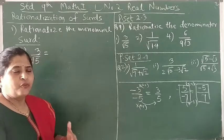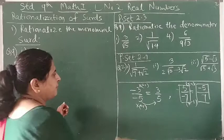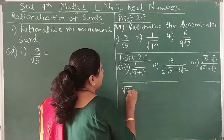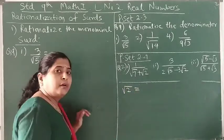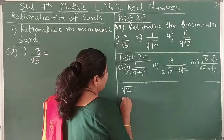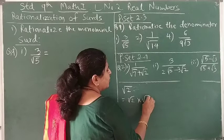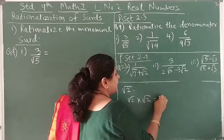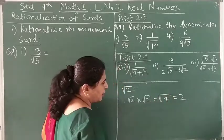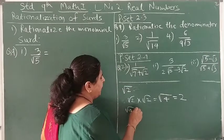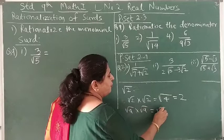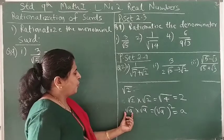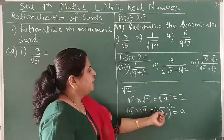What is the rationalizing factor? To understand it, let's take one example. Suppose we want to make square root of 2 into a rational number — how can we do it? If we multiply square root of 2 by square root of 2, we get square root of 4, which is 2. So square root of a multiplied by square root of a gives us a.